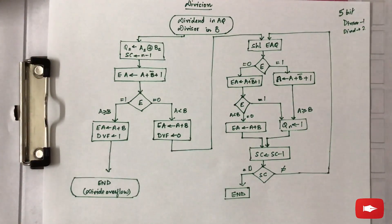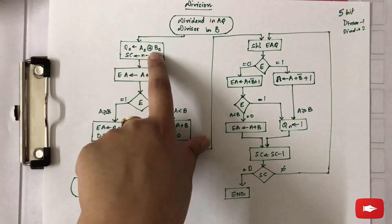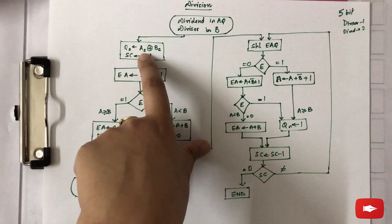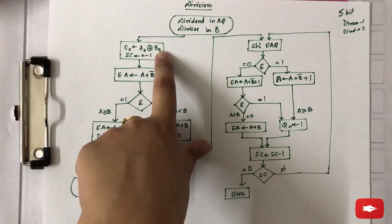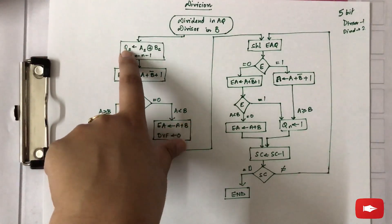If the sign of the dividend and the divisor, that is AQ and B, are alike, the sign of the quotient will be positive. If they are unlike, the quotient sign will be negative. So we perform the XOR gate between the sign bits of the dividend and divisor, and whatever will be the result will be stored in the sign bit of the quotient, that is Q.